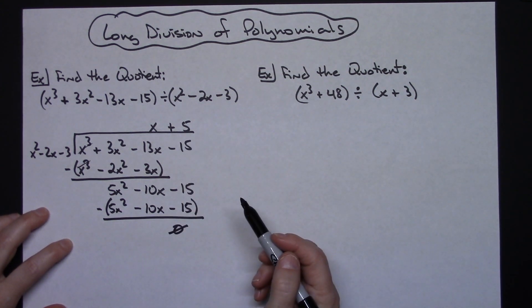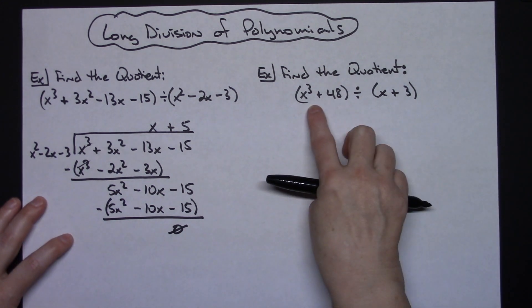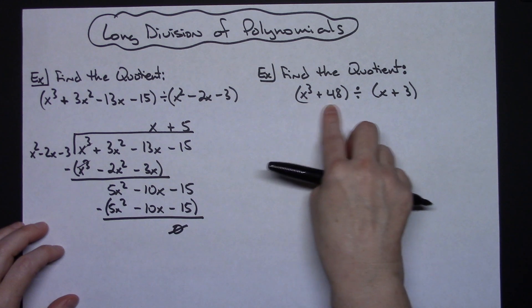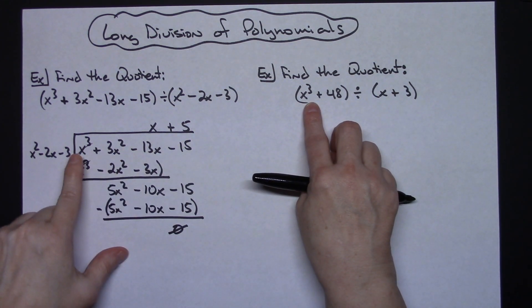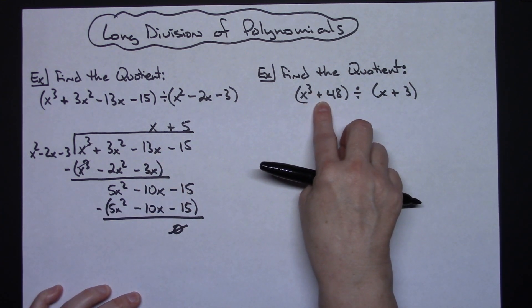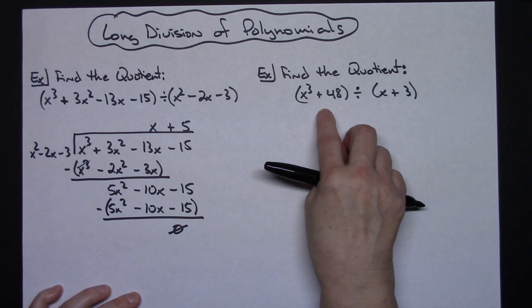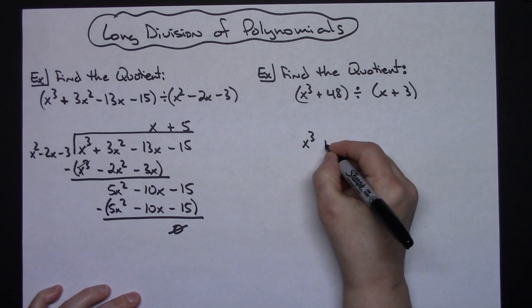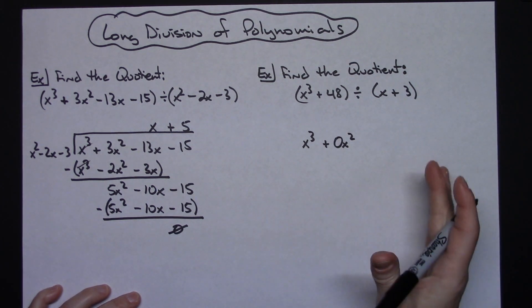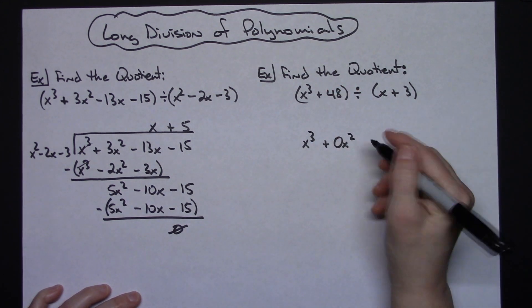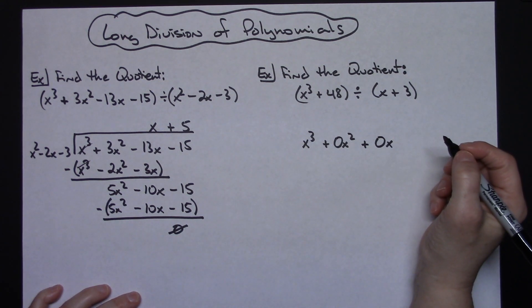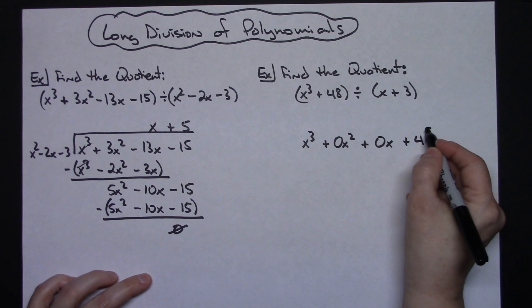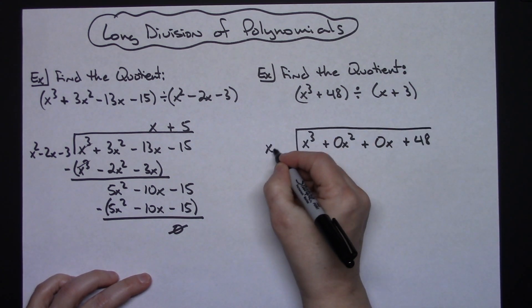My final answer is x + 5. Now on this second example, I've got x³ + 48 divided by x + 3 — I'm missing some terms. This polynomial is missing the x² term and the x term. I need to put in placeholders to make long division easier. Inside the division bar I'll write: x³ + 0x² + 0x + 48, giving me decreasing order of exponents. On the outside I have x + 3.